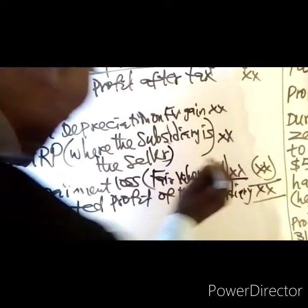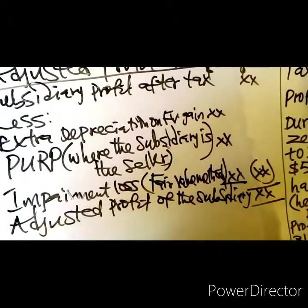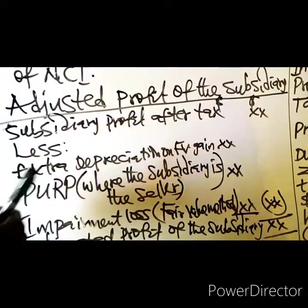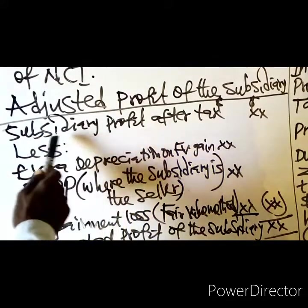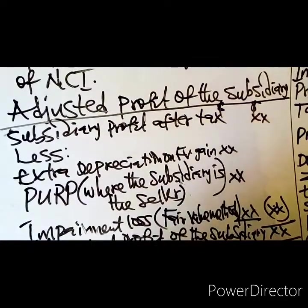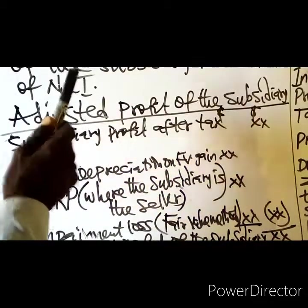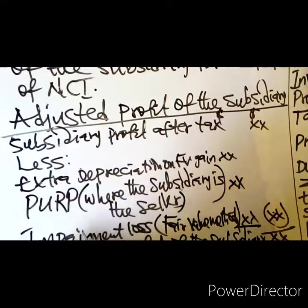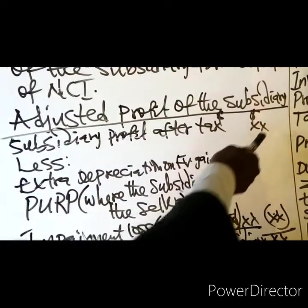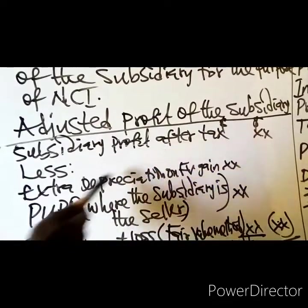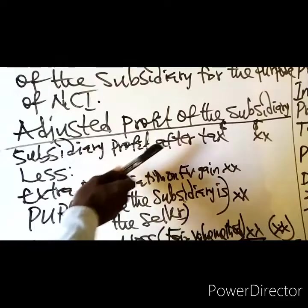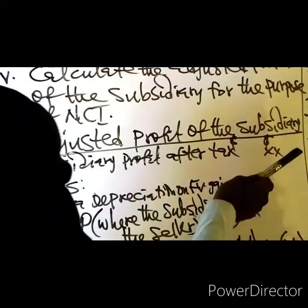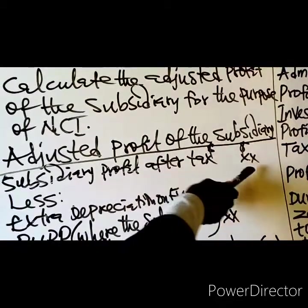The profit to consider should be the profit that relates to the post-acquisition period, especially where the acquisition is during the year — that is, a mid-year acquisition. You apply time apportionment, or you will be given information about seasonal variation to calculate the subsidiary's profit relating to the post-acquisition period. Where the subsidiary was acquired before the financial period, you consider the entire profit after tax.